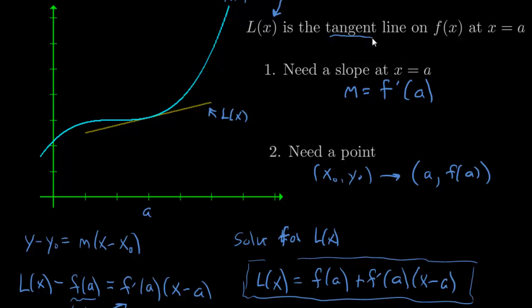Remember that the linearization is simply just the tangent line. So if you're ever asked to find the linearization, you can find the tangent line as well. Now linearizations depend on a. So if I chose a different a, then its tangent line would be different. Just keep in mind that linearizations are not the same at any point on the graph — they will usually be different equations.